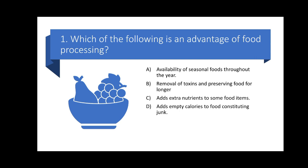Question number 1: Which of the following is an advantage of food processing? Options are: A) Availability of seasonal foods throughout the year, B) Removal of toxins and preserving food for longer, C) Adds extra nutrients to some food items, D) Adds empty calories to food constituting junk. Food processing has made seasonal foods available throughout the year, helps in removal of toxins, and adds extra nutrients through enrichment or fortification. So the correct options are A, B, and C.